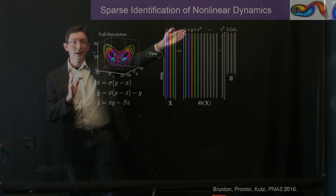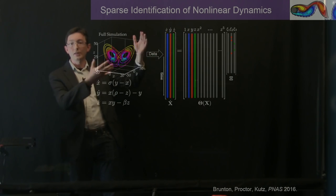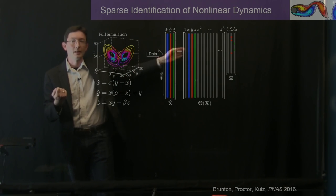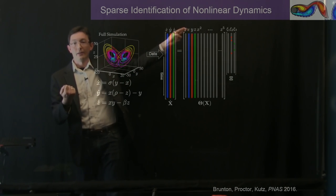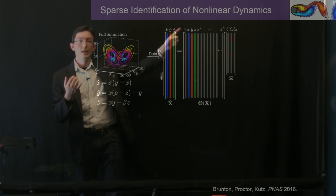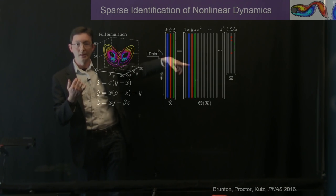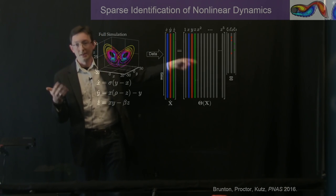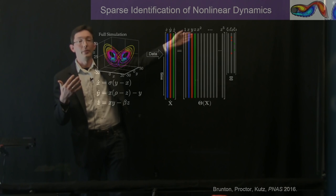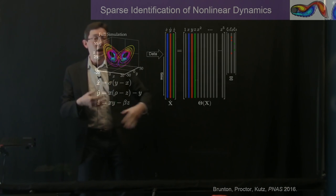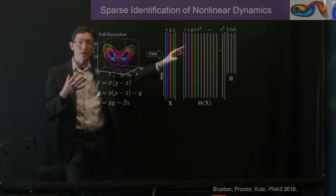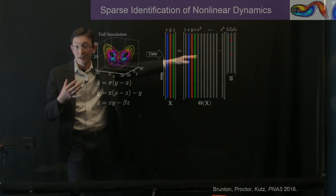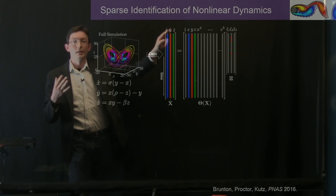From our data x, y, and z, we construct vectors of all possible polynomial nonlinearities up to order five. So we have a vector of ones, vectors of x, y, and z, then x-squared, xy, xz, y-squared, yz, z-squared, and so on up to z-to-the-fifth. We then apply some kind of regression to find which linear combination of these nonlinearity terms represents x-dot, y-dot, and z-dot. It's a simple idea, but we're leveraging the fact that the dynamics for this system — and lots of systems — happens to be sparse.